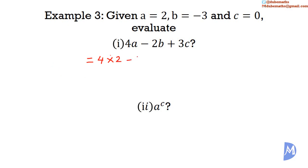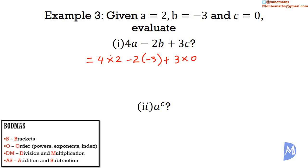Subtract 2 multiplied by b, which is 2 multiplied by negative 3. Add 3 multiplied by 0. With BODMAS, we do brackets first — there are no brackets. We do order — there are no powers. Then we do division and multiplication from left to right. 4 multiplied by 2 is equal to 8. Negative 2 multiplied by negative 3 is equal to positive 6. And 3 multiplied by 0 is equal to 0. Now we do addition and subtraction from left to right: 8 plus 6 is equal to 14.